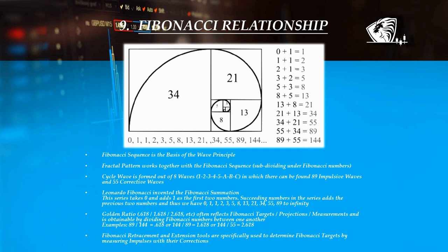The golden ratio — 0.618, 1.618, 2.618, etc. — is a must when applying the wave principle, as it often reflects Fibonacci targets, projections or measurements, end of waves, consolidation areas, and points of interest. The golden ratio is obtainable by dividing a Fibonacci number by a previous Fibonacci number. For example: 89 divided by 144 equals 0.618; 144 divided by 89 equals 1.618; 144 divided by 55 equals 2.618. In structures, waves relate to one another with the Fibonacci ratio, hence the reason why measuring an impulse with its correction would determine the Fibonacci projections for the next moves and waves. Fibonacci retracements and Fibonacci extension tools are specifically used for this purpose.